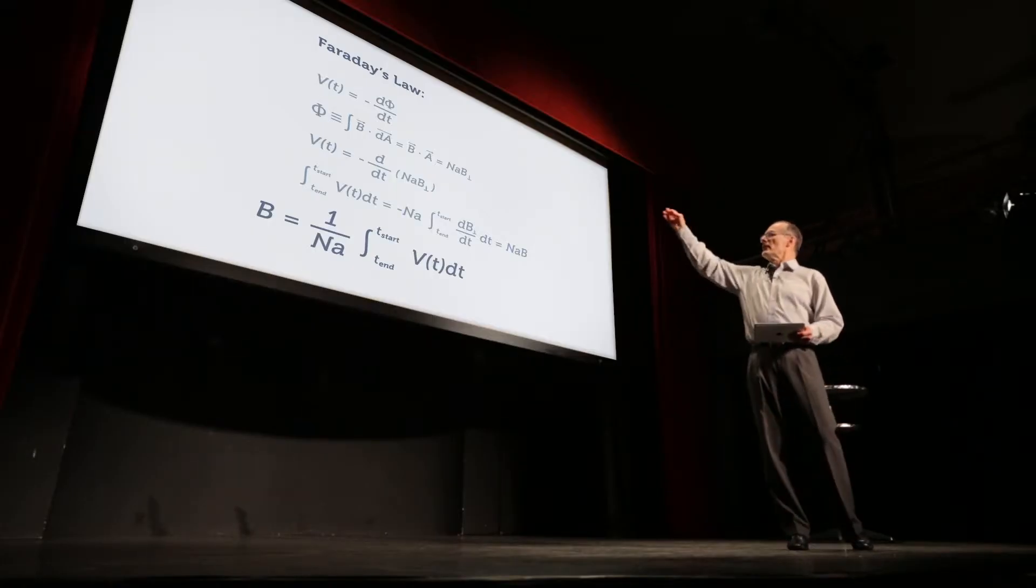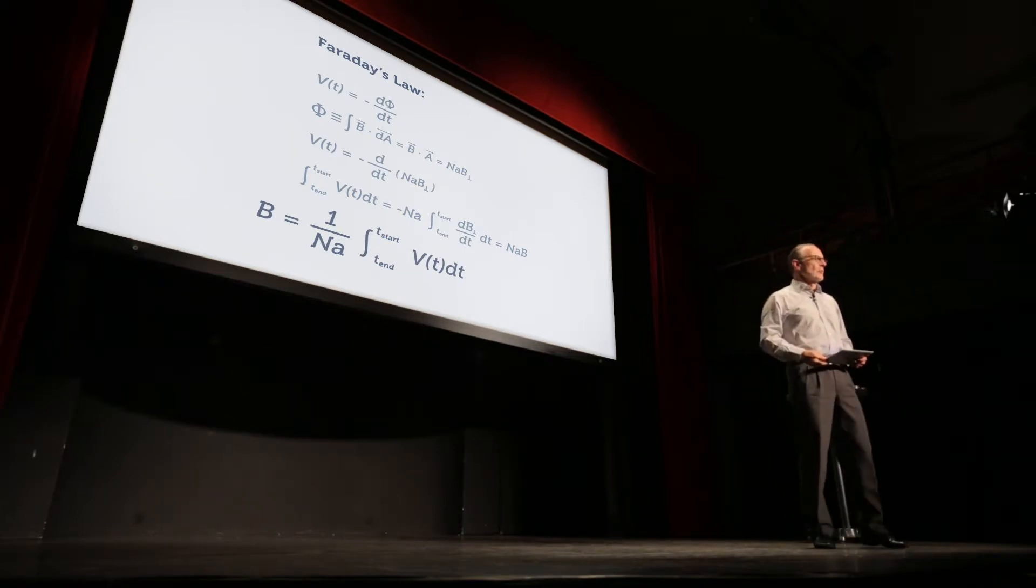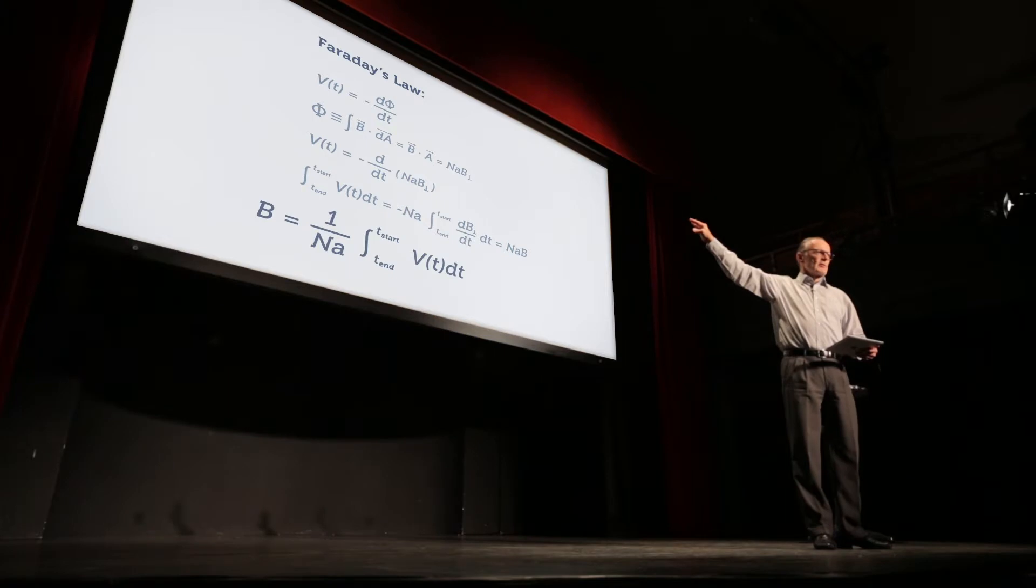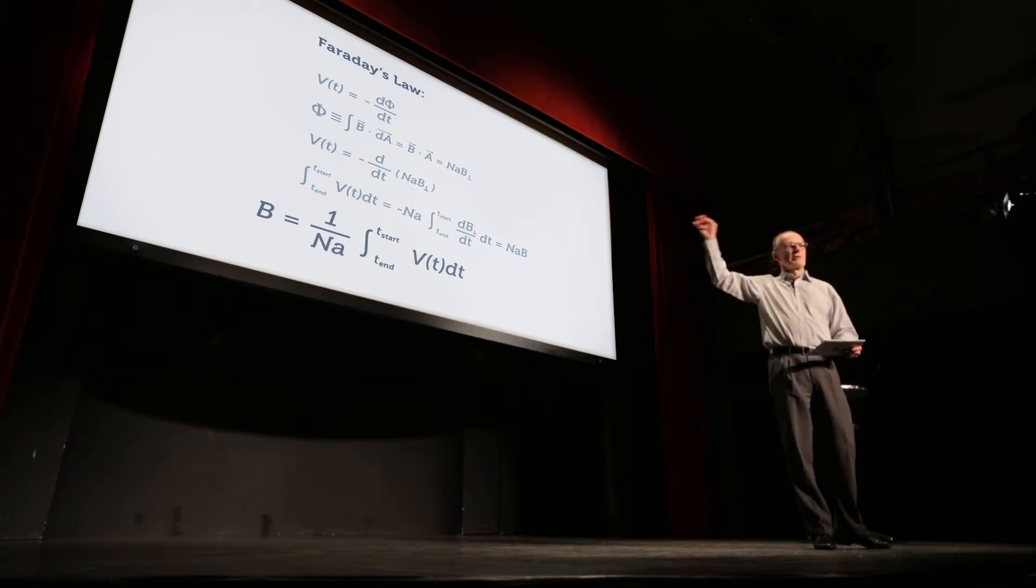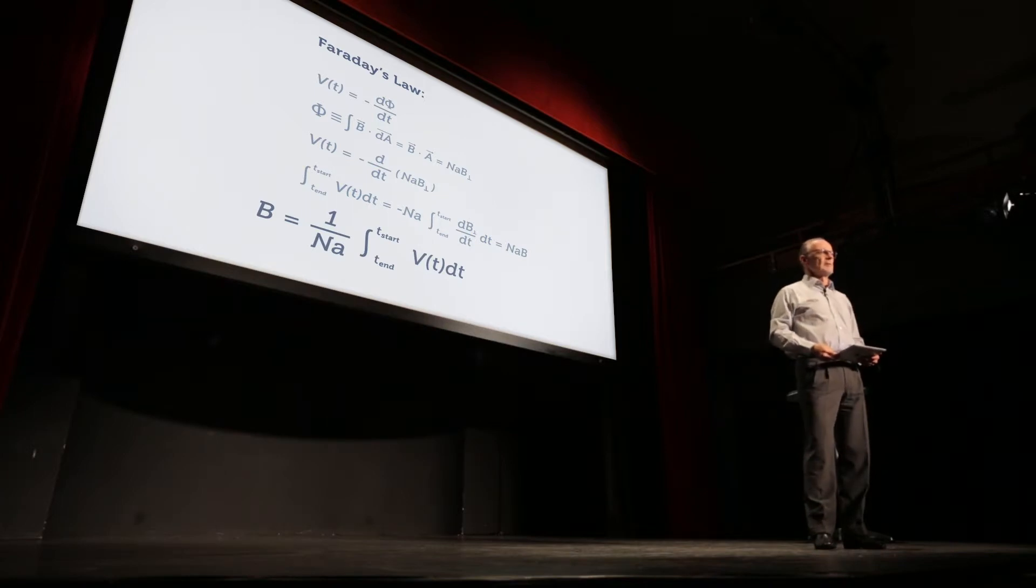And what we end up with is finally an expression for the flux density, which, very importantly, on the right-hand side of the equation has the integral, the time integral of the voltage, and that you divide by the total area of the coil. So that's lots of simplifications in through there, but that is the basic equation that is applicable to using flux meters.